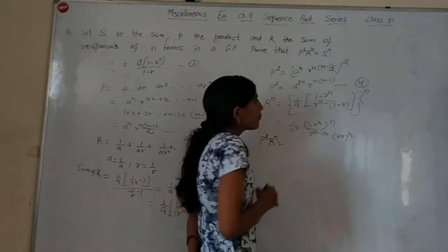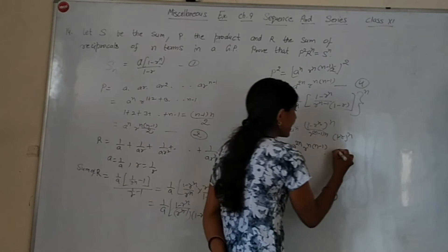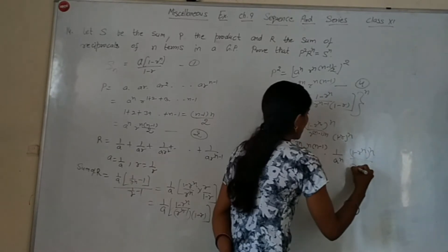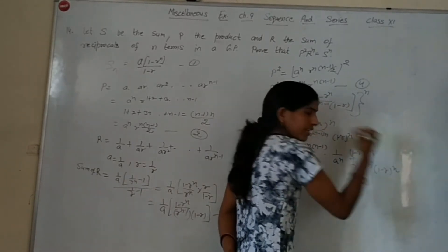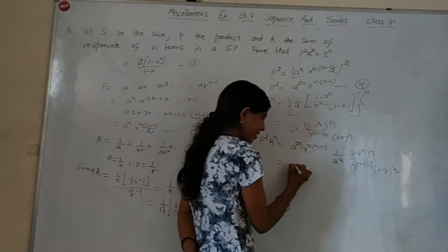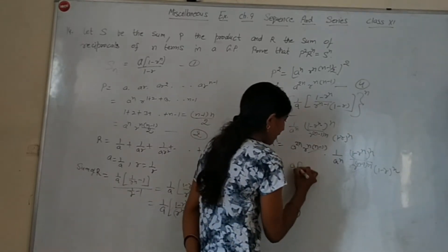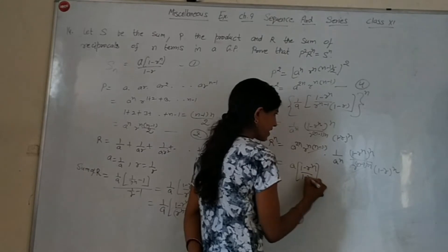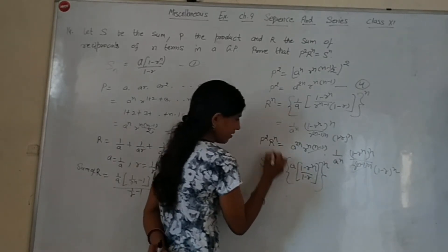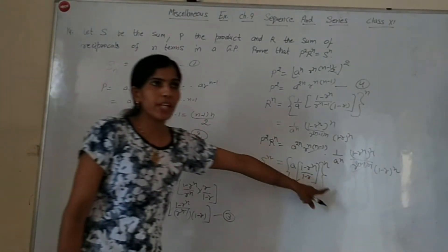Here a^(2n) and aⁿ cancel to give aⁿ, and r^(n(n-1)) in numerator and denominator cancel out. So P² · Rⁿ = aⁿ · (1 - rⁿ)ⁿ / (1 - r)ⁿ = [a(1 - rⁿ)/(1 - r)]ⁿ = Sⁿ. Hence proved.